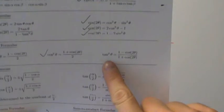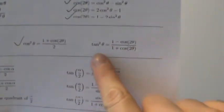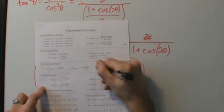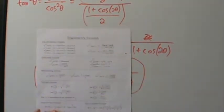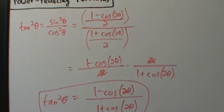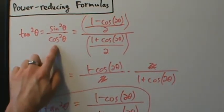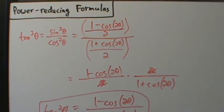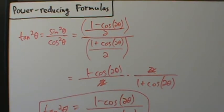And that's it — that's our third power-reducing formula. Tangent squared of theta equals one minus cosine two theta over one plus cosine two theta. Those are the power-reducing formulas for sine, cosine, and tangent. Again, the ones for sine squared and cosine squared are pretty useful in calculus.